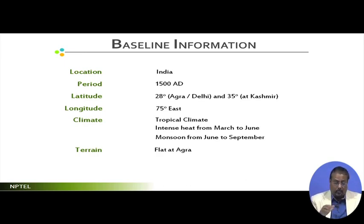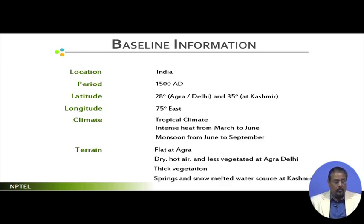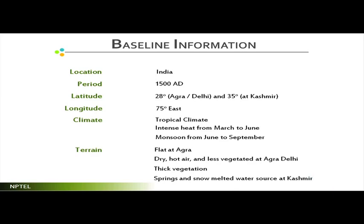In the Kashmir region it is cooler throughout. The terrain is flat in Agra with dry hot air and less vegetation. Kashmir has thick vegetation with springs and snowmelt water sources, which is not true in Agra and Delhi. How does it differ from Spanish landscape? In Spanish landscape they used the landscape as required, but in Mughal they used a different style which I am coming to.